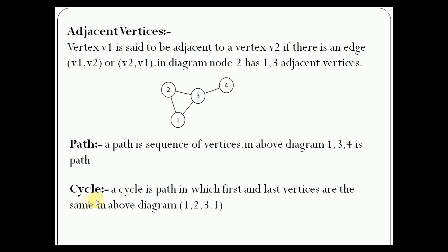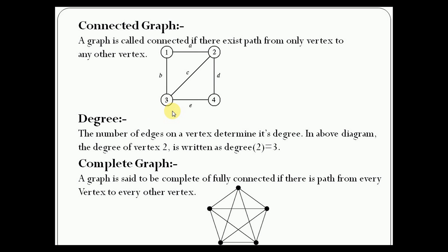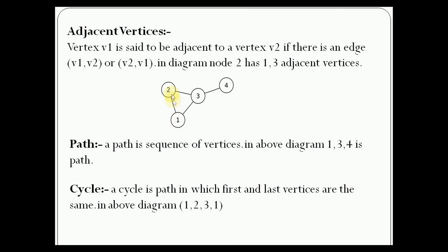A cycle is a path in which the first and last vertices are the same. In the above diagram, 1, 2, 3, 1 is a cycle.